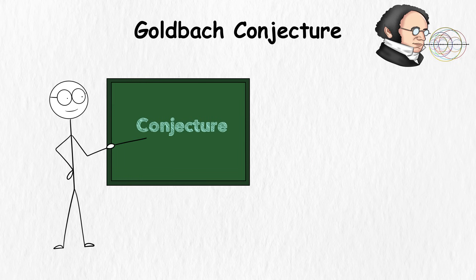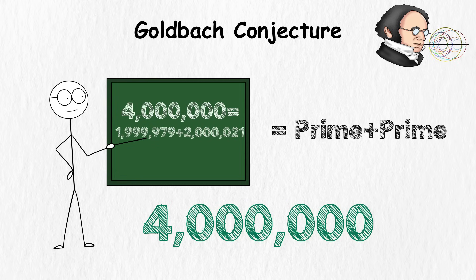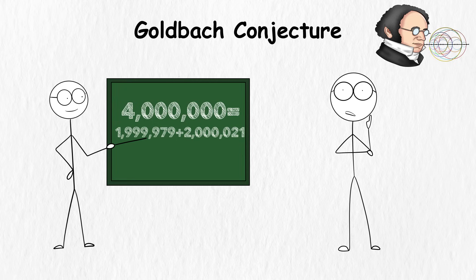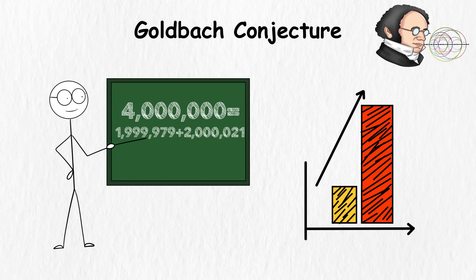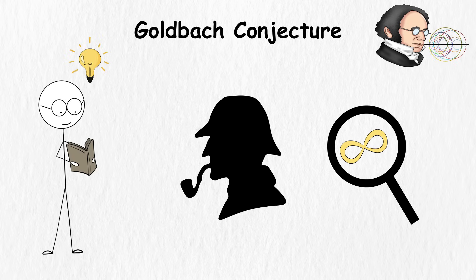According to the Conjecture, 4 million should be expressible as the sum of two primes. One possible representation is 4 million equals 1,999,979 plus 2,021. But you can't prove that this is the same to numbers that are several times larger, like Sherlock Holmes investigating a crime with infinite suspects. It will take some serious deductive math skills to crack this one.